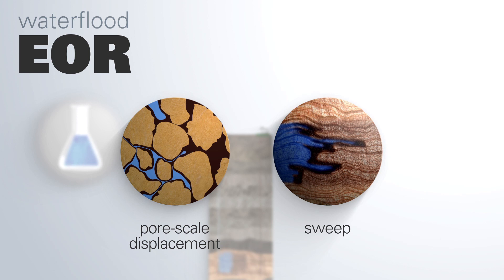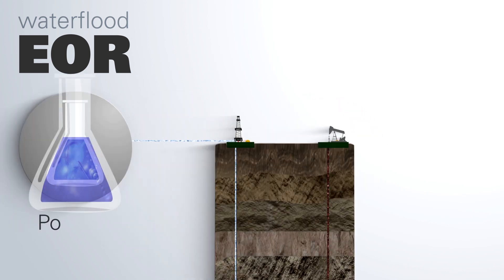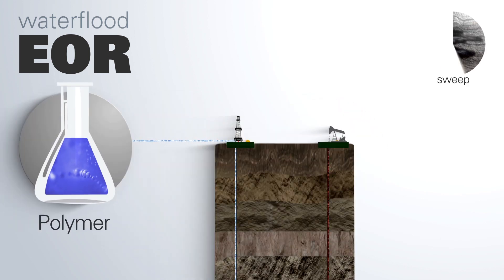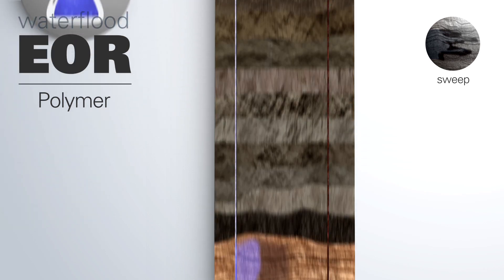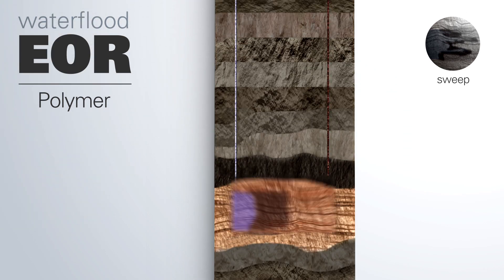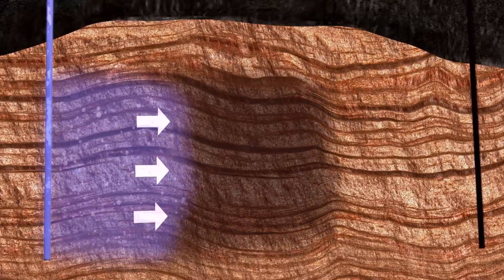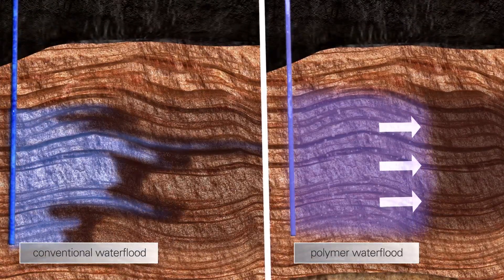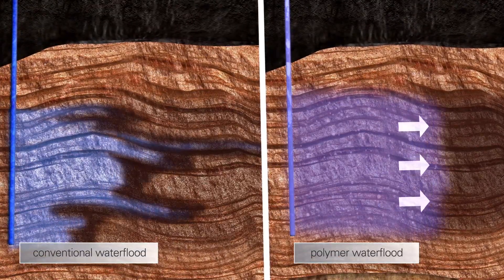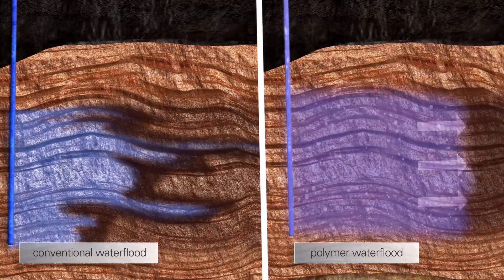These methods include adding polymers to improve sweep. Polymers are thickening agents that are added to the water when oil in the reservoir is more viscous, to improve water flood sweep. In this method, the polymer aims to make the water as viscous as the oil in the reservoir so it can displace more of it.